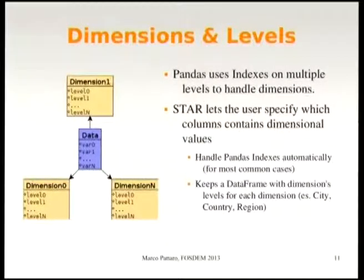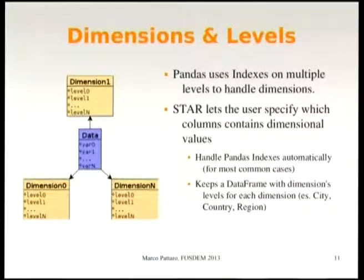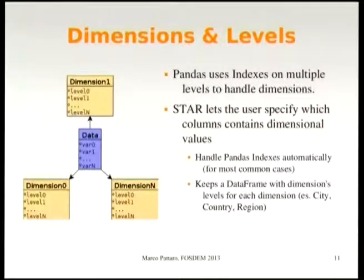This is the basic idea behind dimensions. It's a typical star structure in which data are in the center, and dimensions, definitions, and levels are linked together in a star shape. Typically this is used for aggregation operations and to change level — for example, the typical case is city, country, and region, which can be easily switched with just one function call.